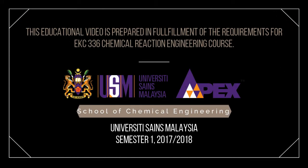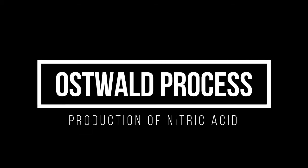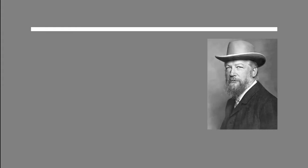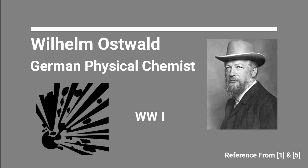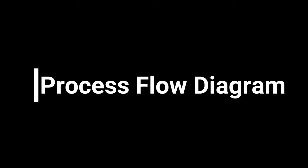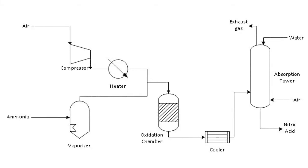In this video we are going to talk about the Ostwald process, which is how nitric acid is produced. The Ostwald process was discovered by Wilhelm Ostwald, a German physical chemist, in 1900. This process was used by Germany to make explosives during World War One. Let's look at the process flow diagram.